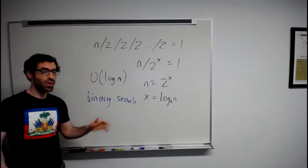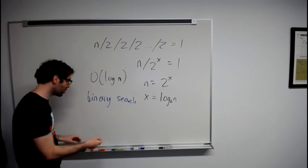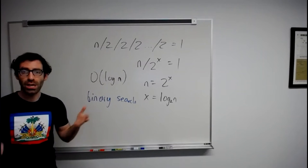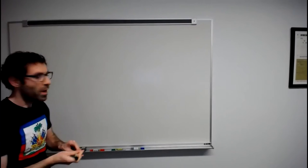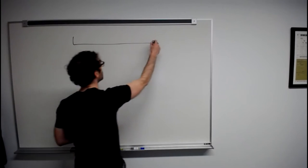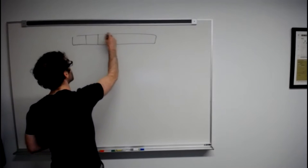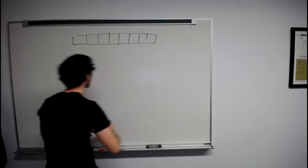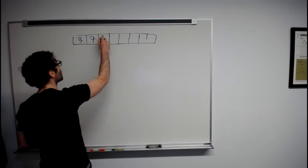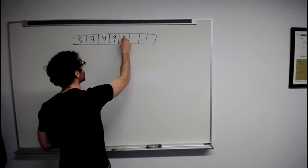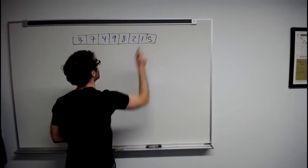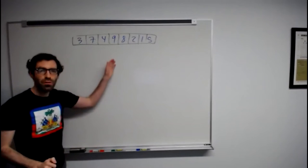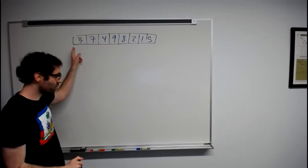So how would these two search strategies - linear search and binary search - work in terms of something we might search through in code, like an array? We have our array with values inside of it.